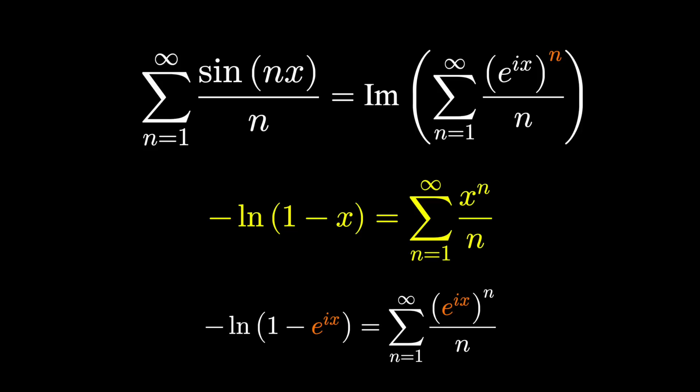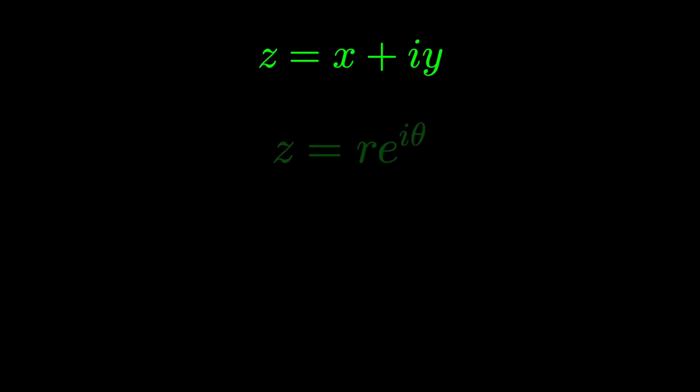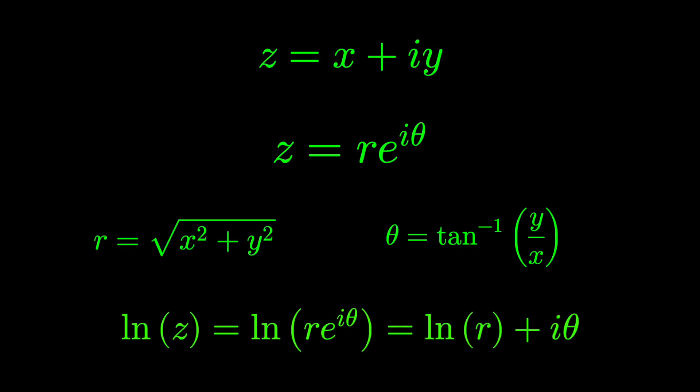Now our job comes down to evaluating a complex logarithm, and if you watched my video on how to do so, you'll be well prepared. We know any complex number can be represented in its polar form, r e to the i theta, where r is the square root of x squared plus y squared, and theta is the inverse tangent of y over x. That gives us that the natural logarithm of any complex number is the natural logarithm of r plus i times theta.